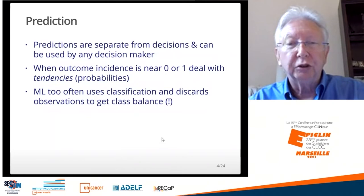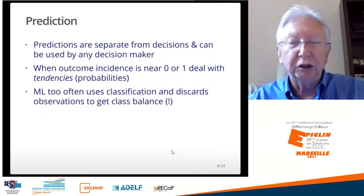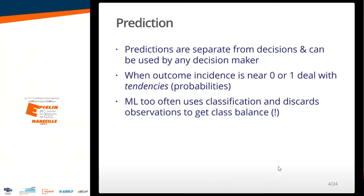Predictions are separate from decisions, which is why I like predictive modeling so much — you can let somebody else deal with the consequences. The predictions can be used by any decision maker because they have disconnected the utility function. When an outcome incidence is near zero or one, you have to deal with tendencies. So if you're predicting a rare disease where the probability of disease for most people is close to zero, you can't really predict disease presence or absence — a classifier is an inappropriate tool in that context. You can only predict tendencies, which would be probabilities.